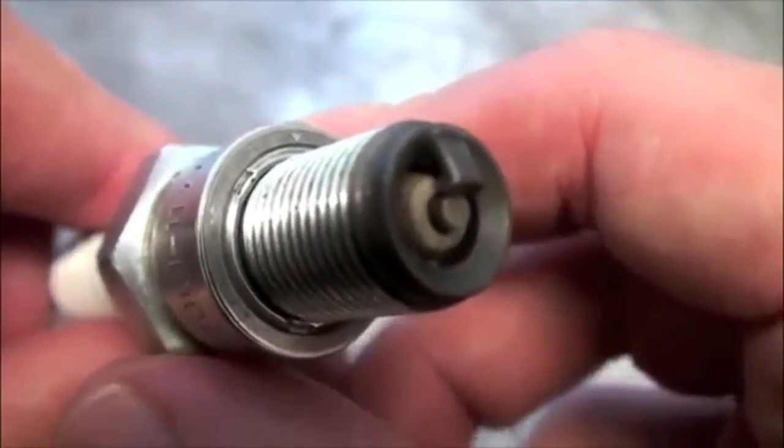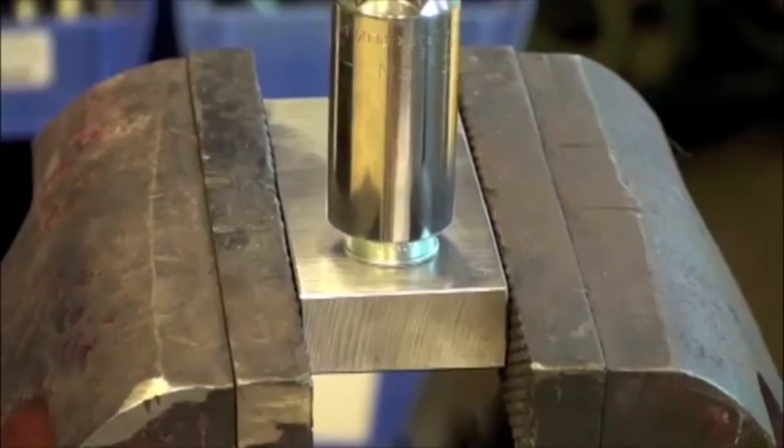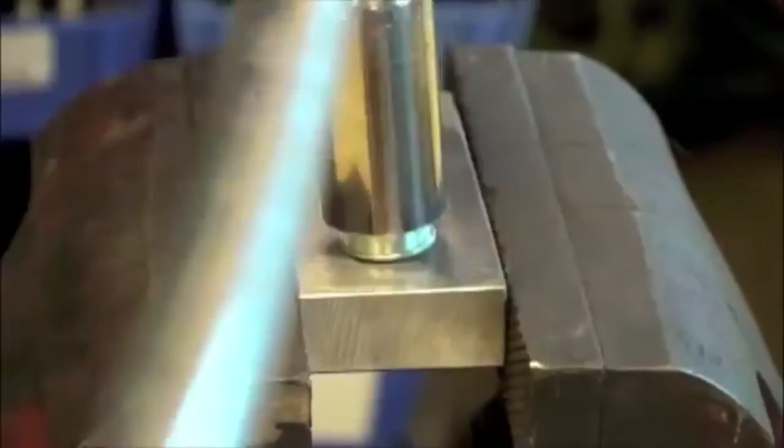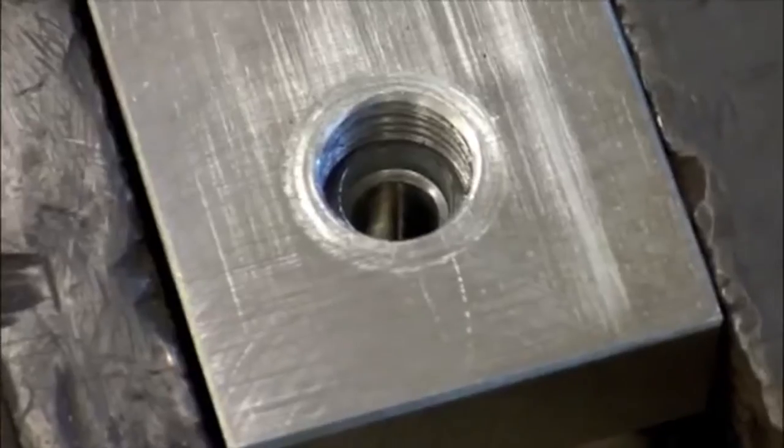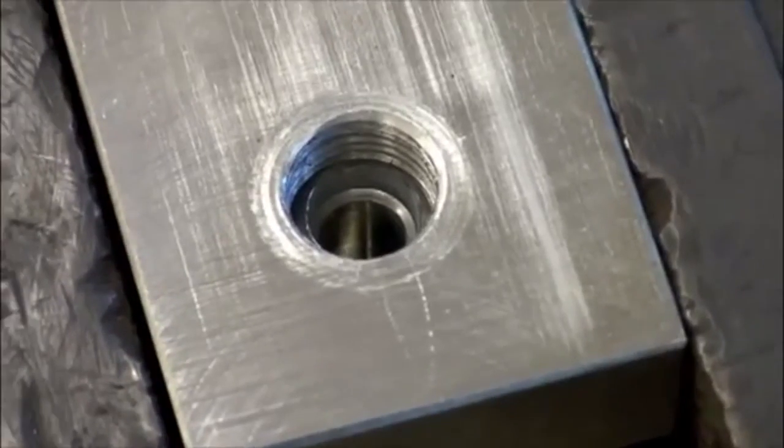If the spark plug thread breaks off in the cylinder head, special tools may be required to remove the thread shell. A tool such as an easy out may be necessary to remove the broken threads.